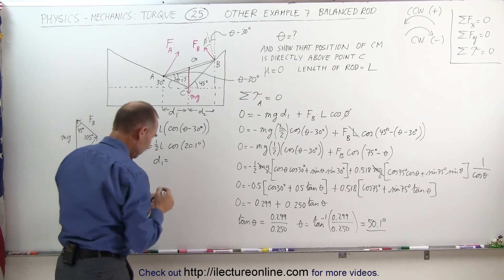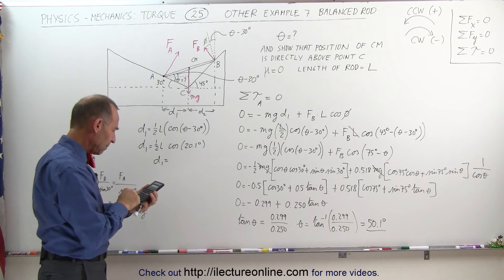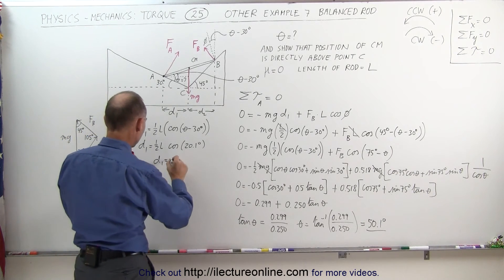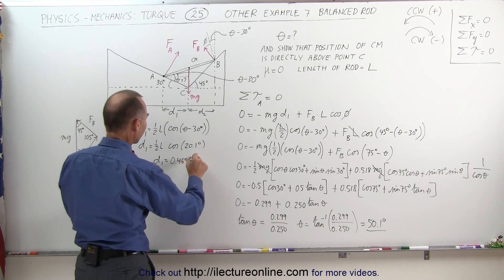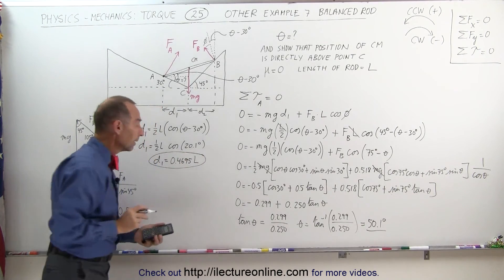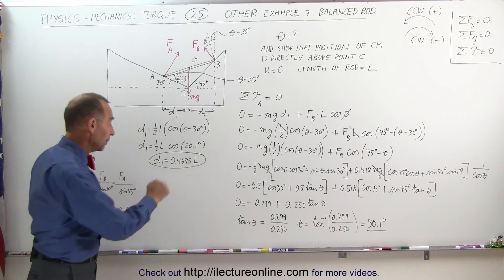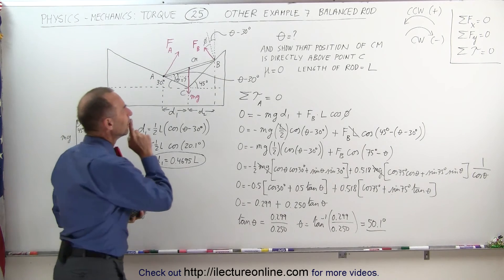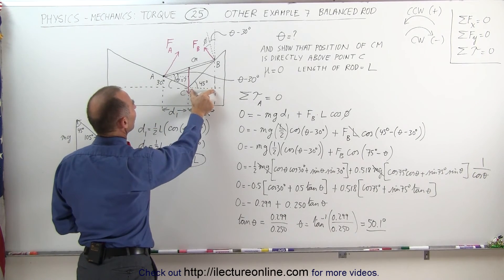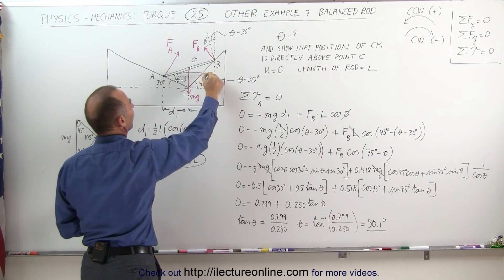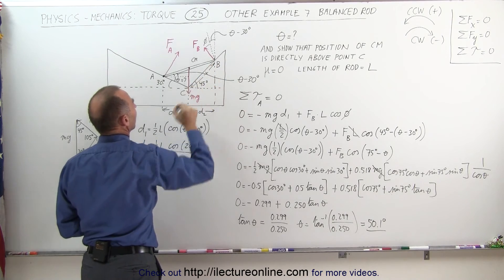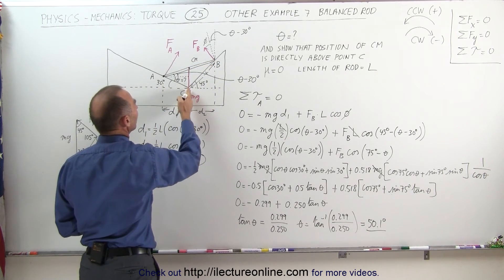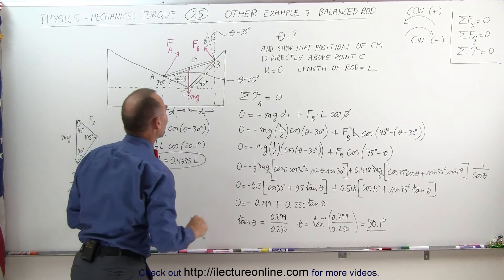Calculating: cosine(20.1°) times 0.5 gives D1 equal to 0.4695 times the length of the rod. Now we have to find D2, and it better equal 0.4695L. If it does, the center of mass is directly above point C. Let's call x the distance from point B to the center of mass — we're assuming this is half the length of the rod.